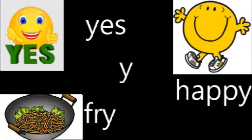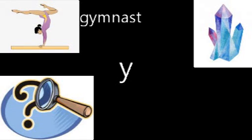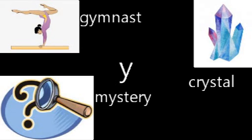And what we're going to do now, we're going to look at the Y grapheme making an I sound. So we've got three pictures again. We've got a gymnast — G-I-M-N-A-S-T — gymnast. We've got a crystal — C-R-I-S-T — crystal. And we've got a mystery — M-I-S-T-R-I — mystery. Can you see with mystery, we've got the Y making an I sound in the middle, and at the end it's making an E sound.